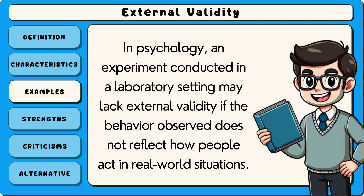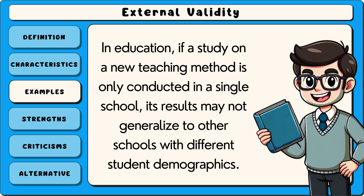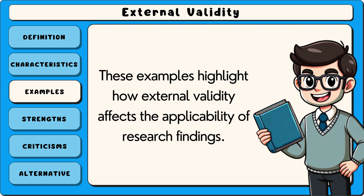In psychology, an experiment conducted in a laboratory setting may lack external validity if the behaviour observed does not reflect how people act in real-world situations. In education, if a study on a new teaching method is only conducted in a single school, its results may not generalise to other schools with different student demographics. These examples highlight how external validity affects the applicability of research findings.